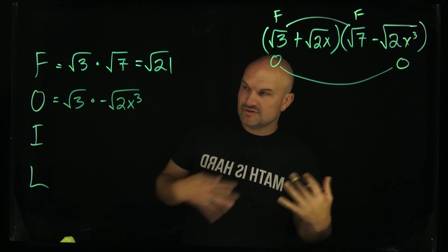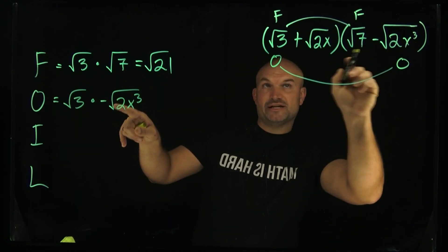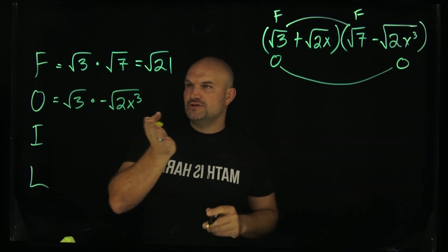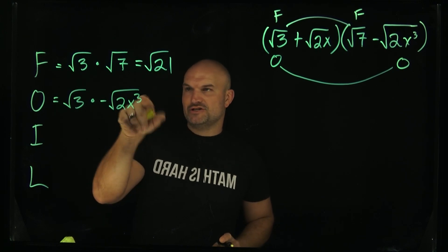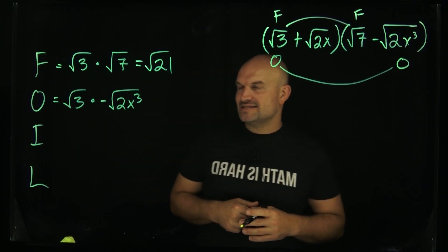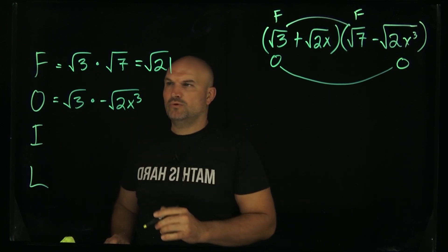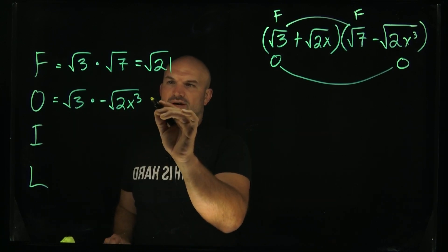Again, they're both square roots. This one is a negative, so make sure you're keeping track of that. We're going to multiply these straight across. I have x cubed, which I could definitely simplify. You could break that up. We'll work on that in just a second.